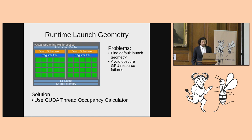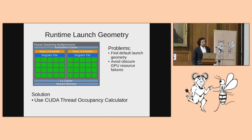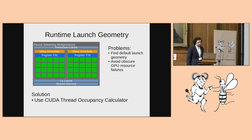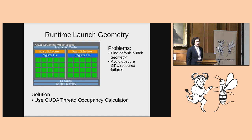Moving on to NVPTX runtime launch geometry issues — there are actually two problems. The first is that there are two different ways to specify what I call the geometry of OpenACC kernels: the number of gangs, number of workers, and the size of the vector. OpenACC provides explicit clauses the user can write — num_gangs, num_workers, vector_length. If the user doesn't include those clauses, it's up to the runtime to select values.